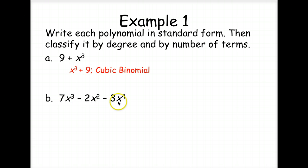Is this one in order? Nope. This is to the fourth power, so this term comes first. Be sure to bring the negative sign with it. So negative 3x to the fourth, then second is the third, and finally is the second. This is to the fourth power, so it's a quartic, and there's three terms, so it is a trinomial.